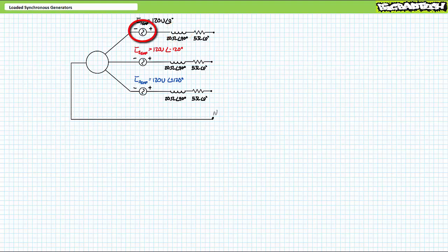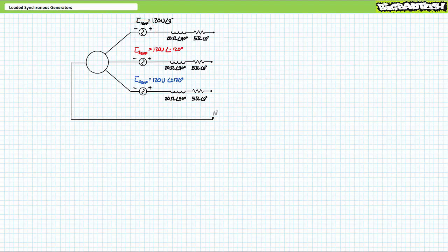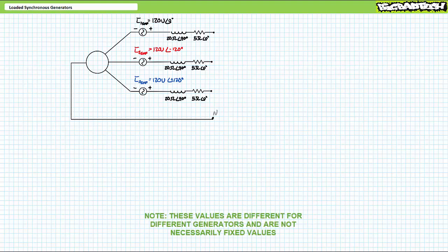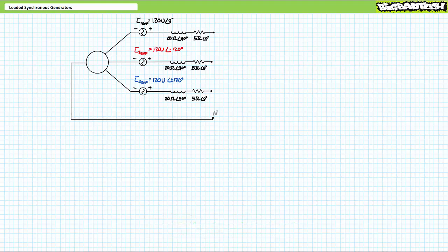An important distinction needs to be made between the electromotive force produced by the generator and the output voltage at the stator terminals. For the purposes of this simplification, let's consider just one winding of a Y-connected three-phase stator — you'll have to imagine everything occurring in the remaining two phases with a 120-degree phase shift. Let's assume the internal stator resistive component has a magnitude of 5 ohms at an angle of 0 degrees, and the internal stator inductive component has a magnitude of 20 ohms at an angle of 90 degrees.